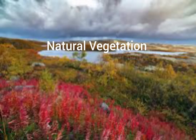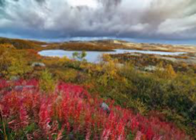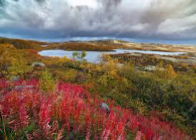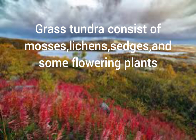The natural vegetation of the Tundra region consists of bushes that border the coniferous belt. The bushes consist of dwarf plants like alders, birches, junipers and willows — basically small stunted plants. Then there is grass tundra, which is a kind of vegetation consisting of mosses, lichens, sedges as well as flowering plants.